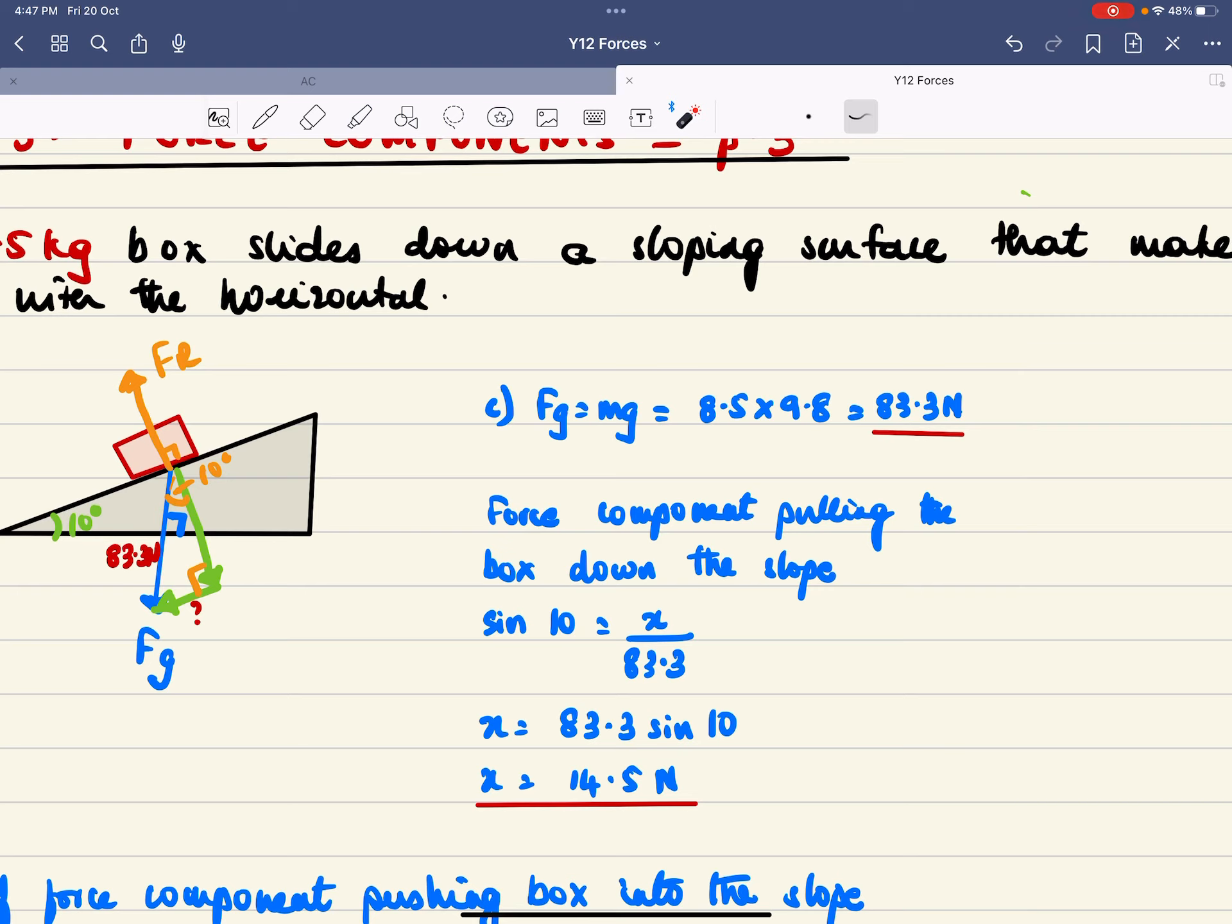Now the force component of gravity that's pulling the box down the slope. So what I did was I resolved this gravity force into one component which is parallel to the surface and the other component which is kind of an extension of this.